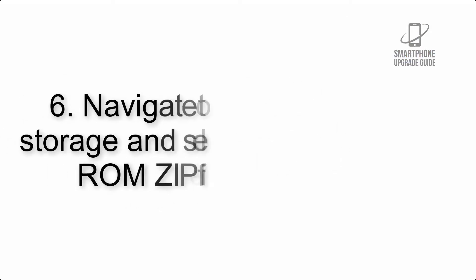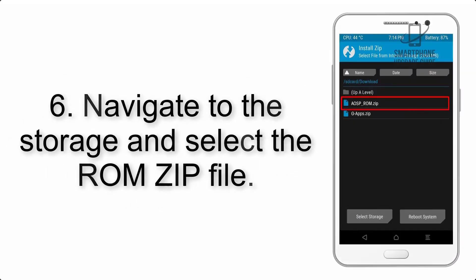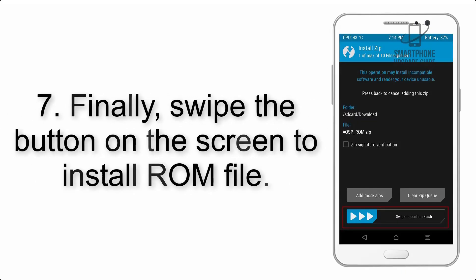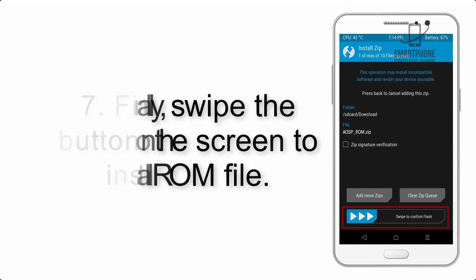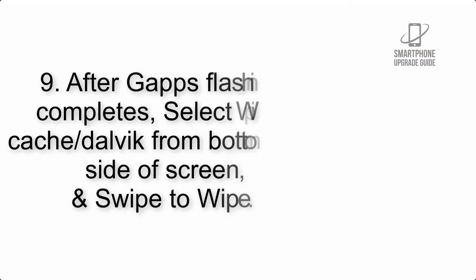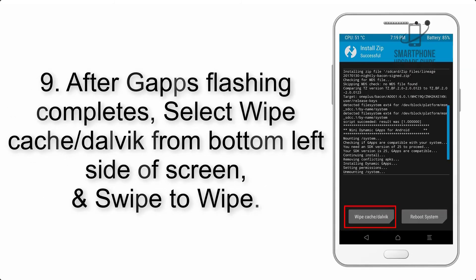Step 6: Navigate to the storage and select the ROM zip file. Step 7: Swipe the button on the screen to install the ROM file. Step 8: Flash the GApps zip package in the same manner.